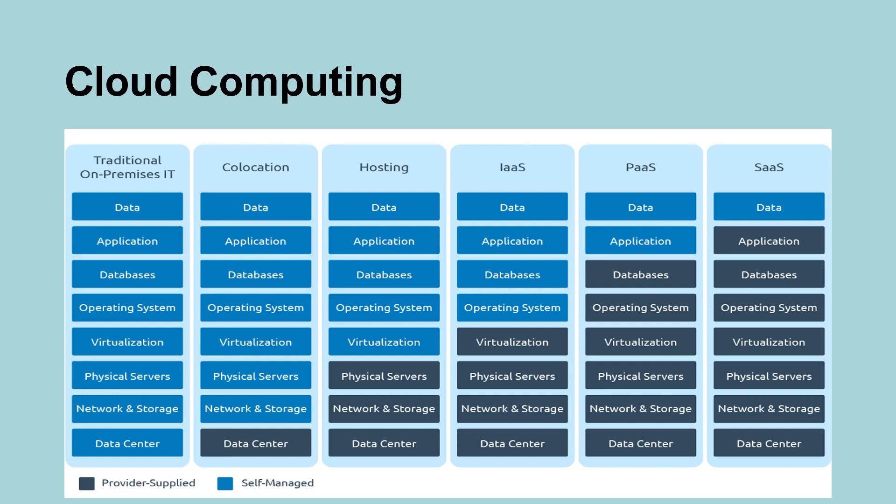Now, if you go to cloud computing and use Infrastructure as a Service, you have to maintain the operating system, database, application and data, and you are responsible for patching and security. The cloud provider is responsible for data center, network storage, physical servers and virtualization. If you use Platform as a Service, then you have to maintain only the data and application.